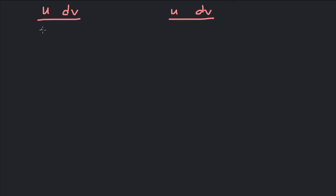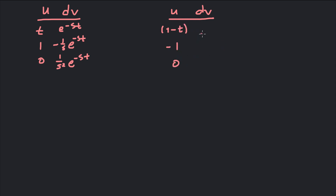For the tabular method: on the left I differentiate — t, then 1, then 0. On the right I integrate e to the negative st, giving negative 1 over s times e to the negative st, then 1 over s squared times e to the negative st. For the second integral, differentiating 1 minus t gives negative 1, then 0, with the same integration column on the right.